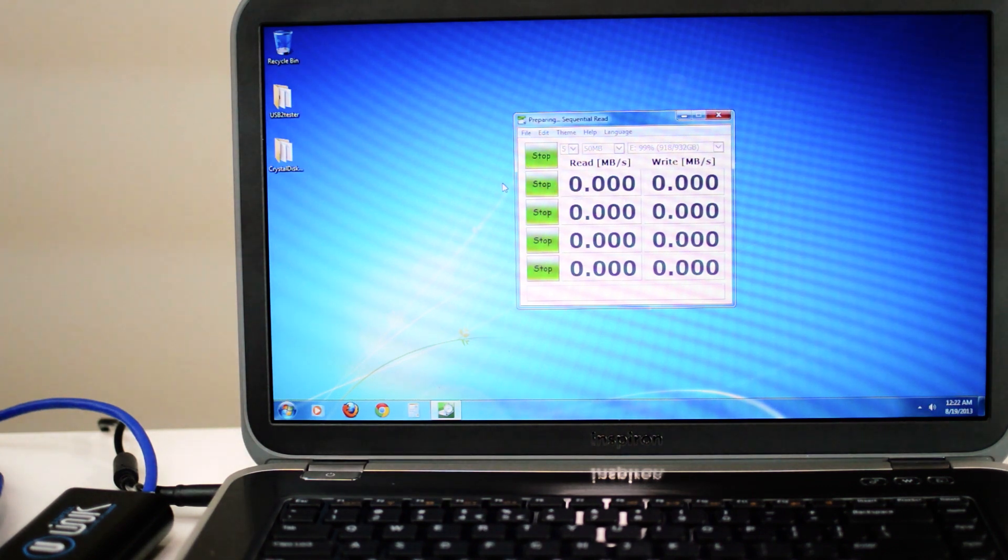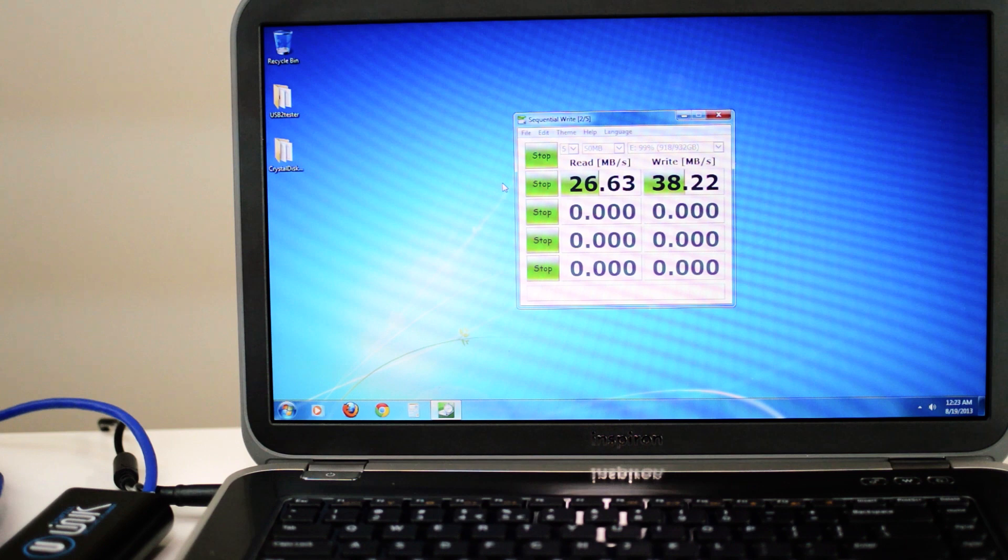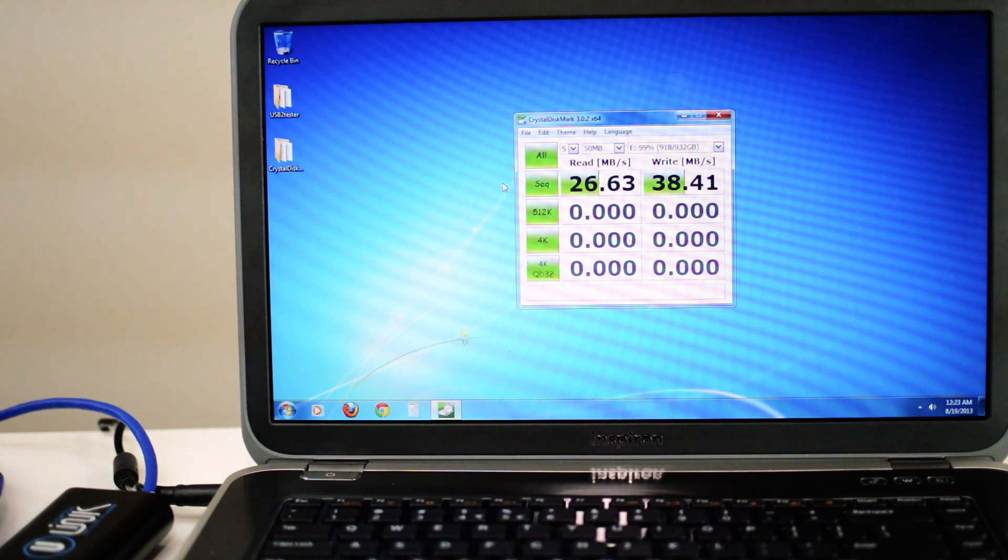First we'll test the U-Link's transfer speeds to the hard drive with this benchmarking software called Crystal Disk Mark. We'll do a 5-pass 50 megabyte test. Once it's done, we get a 26.63 megabyte per second read speed and 38.41 write.